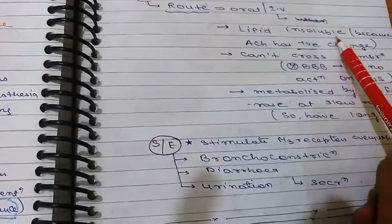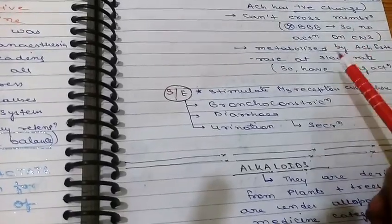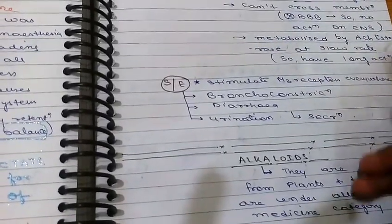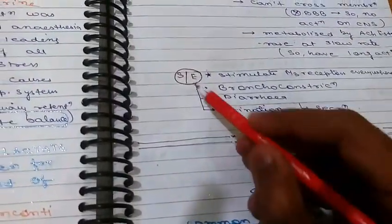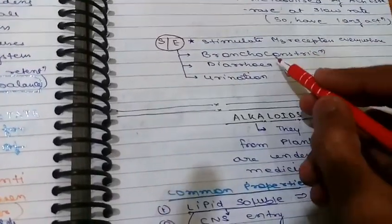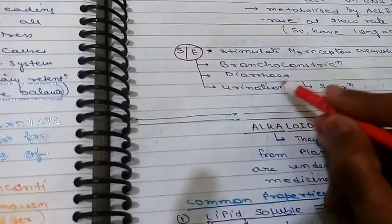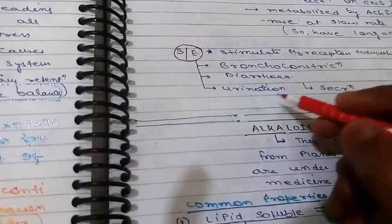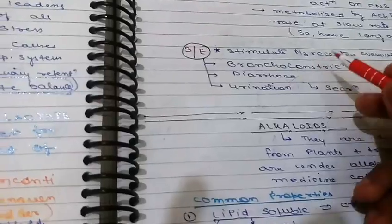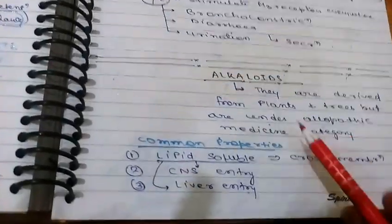Regarding pharmacokinetics, bethanechol is given orally or IV and is lipid insoluble. Because acetylcholine is a quaternary compound, as discussed previously, it is lipid soluble and can cross membranes — but bethanechol cannot reach the blood-brain barrier and so has no CNS action. It is metabolized by acetylcholinesterase at a slow rate, giving it a longer action. Side effects include bronchoconstriction from M3 stimulation, diarrhea, increased urination, and increased secretion, since M3 receptors are present on smooth muscles and glands.